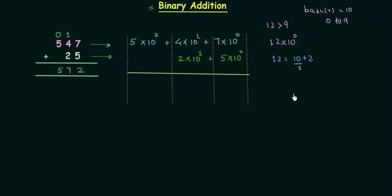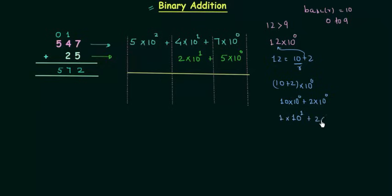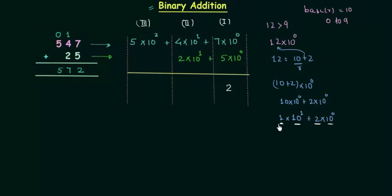So we will break 12 as 10 plus 2. 10 is the base of the decimal number system, and we can write 10 plus 2 multiplied by 10 raised to power 0. This gives us 1 multiplied by 10 raised to power 1 plus 2 multiplied by 10 raised to power 0. So 2 falls in column 1 for weight 10 raised to power 0, and the coefficient 1 falls in column 2 for weight 10 raised to power 1. This 1 is nothing but the carry, and now we know why we have 1 as the carry in our sum.